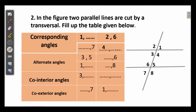Let us write them in the table: corresponding angles — 1 and 5, 2 and 6, 3 and 7, 4 and 8. Alternate interior angles — 3 and 5, 4 and 6. Alternate exterior angles — 1 and 7, 2 and 8. Co-interior angles — 3 and 6, 4 and 5. Co-exterior angles — 2 and 7, and 1 and 8.